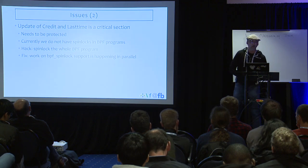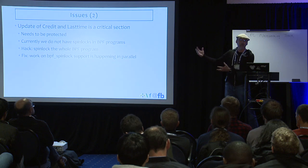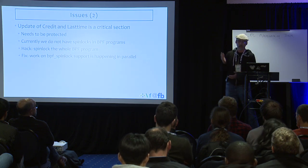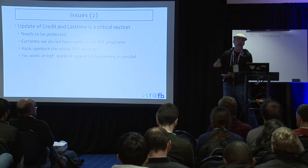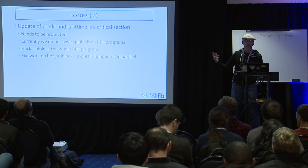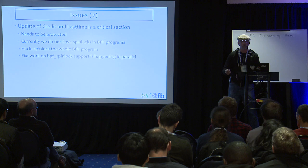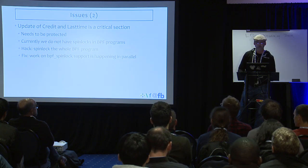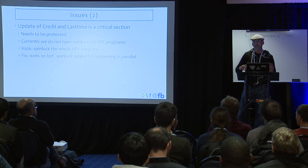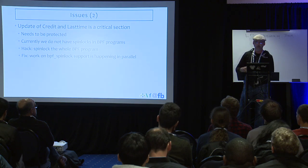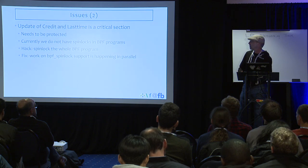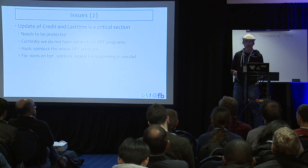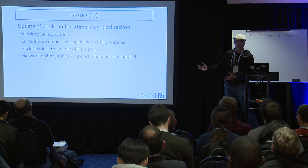Another issue: updating the credit and the last time is a critical section. When I started having more and more flows, things started behaving weirdly — I would put a limit of one gigabit and with enough flows it would go to one and a half gigabits. The reason was that the credit would be updated and then the last time would be updated by somebody else before I did it. Since right now we don't have spin locks in BPF, my hack was to spin lock the whole BPF program. The solutions being worked on are: implementing spin locks for BPF, and using a data structure that does not require locks.